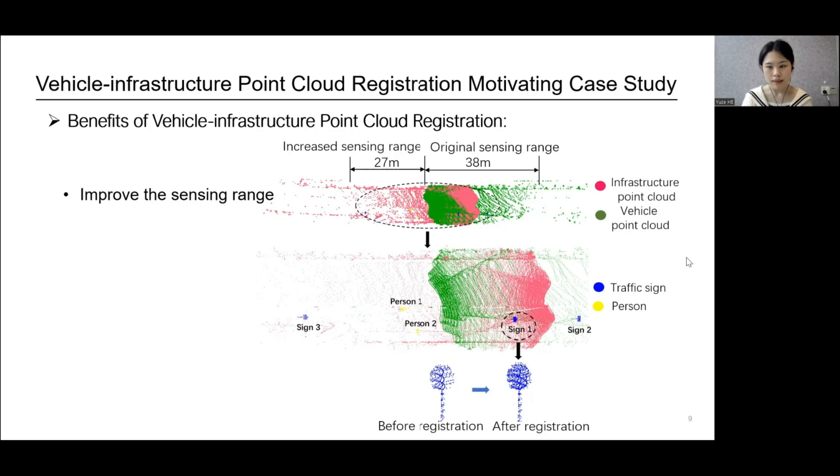On vehicle perception tasks, such as object detection, can thus benefit from the extended perception field. In the second figure, two additional people and traffic sense 3 can be detected after registration. Besides, the registration increases the resolution of the original point cloud, as shown in the third figure, which makes objects to be detected more easily.